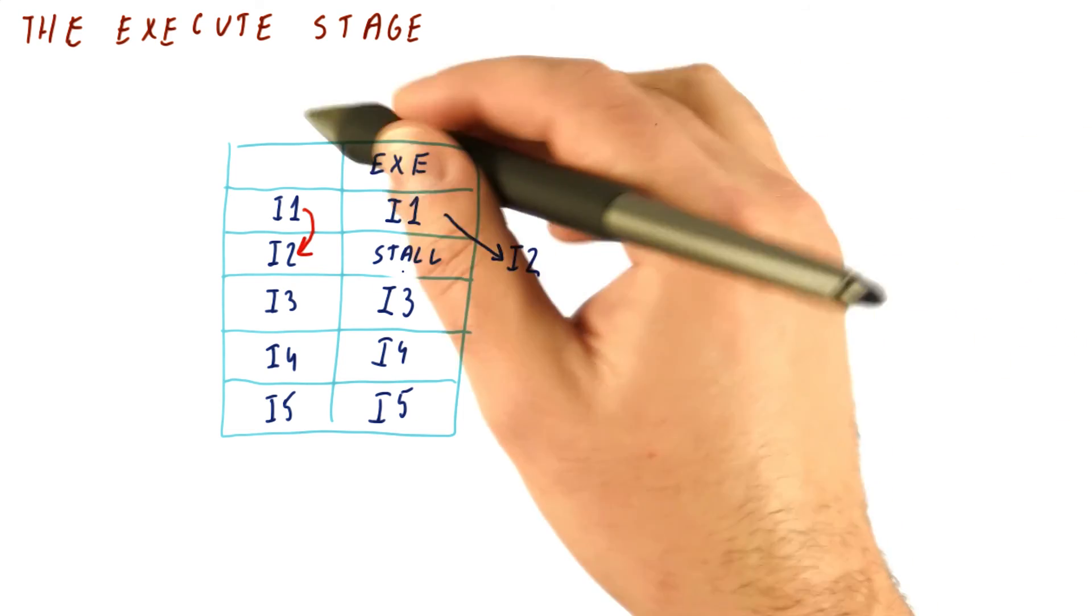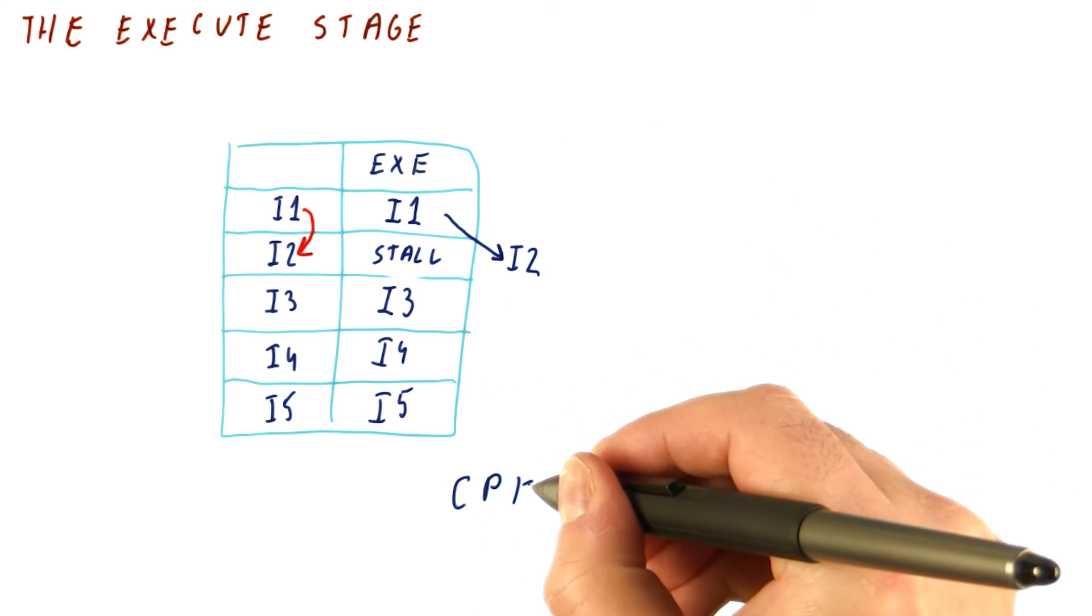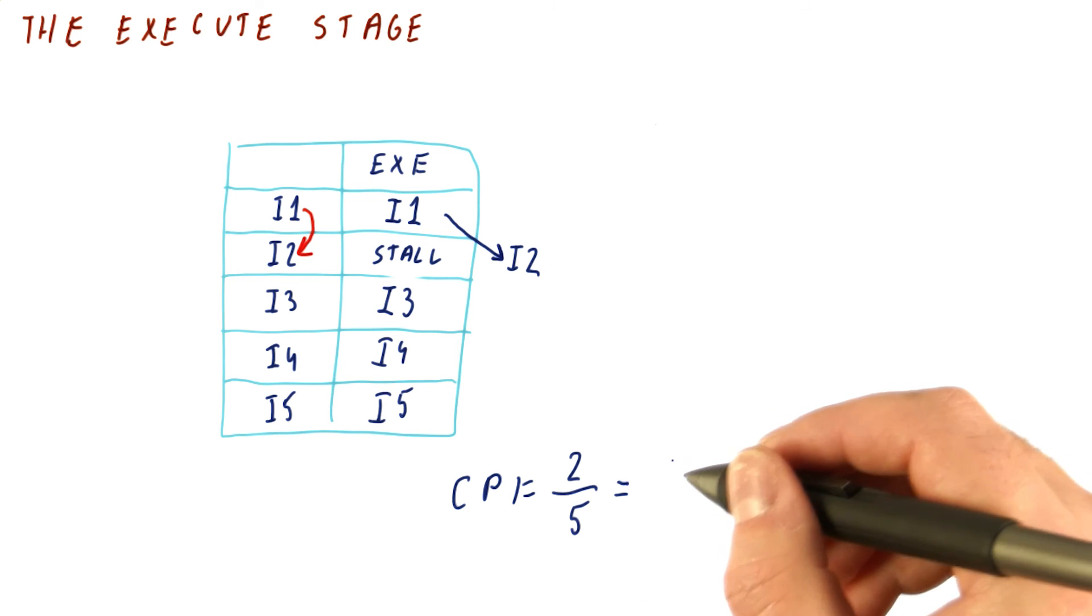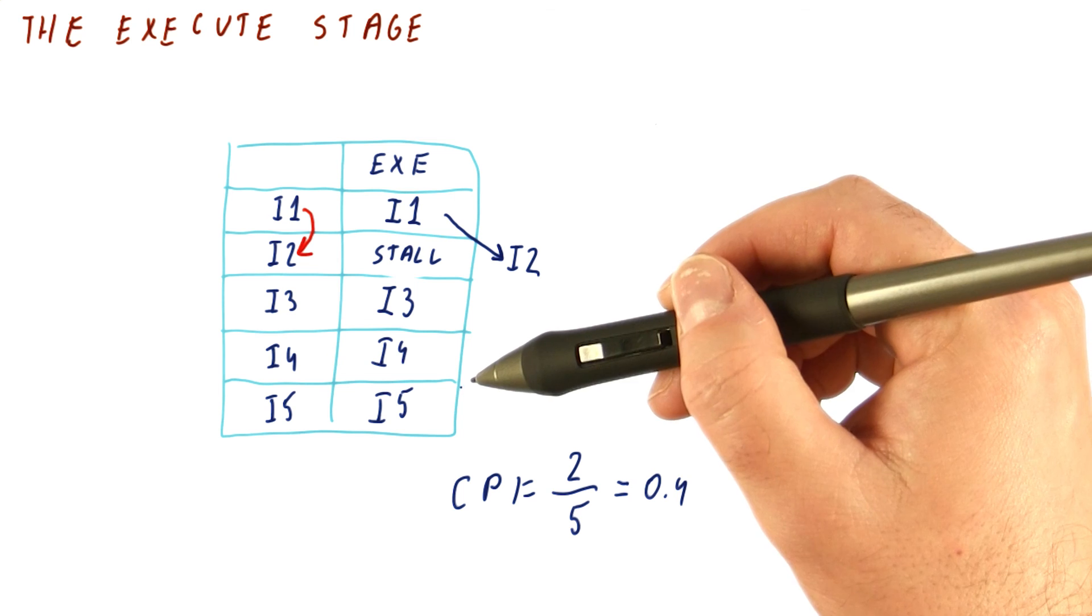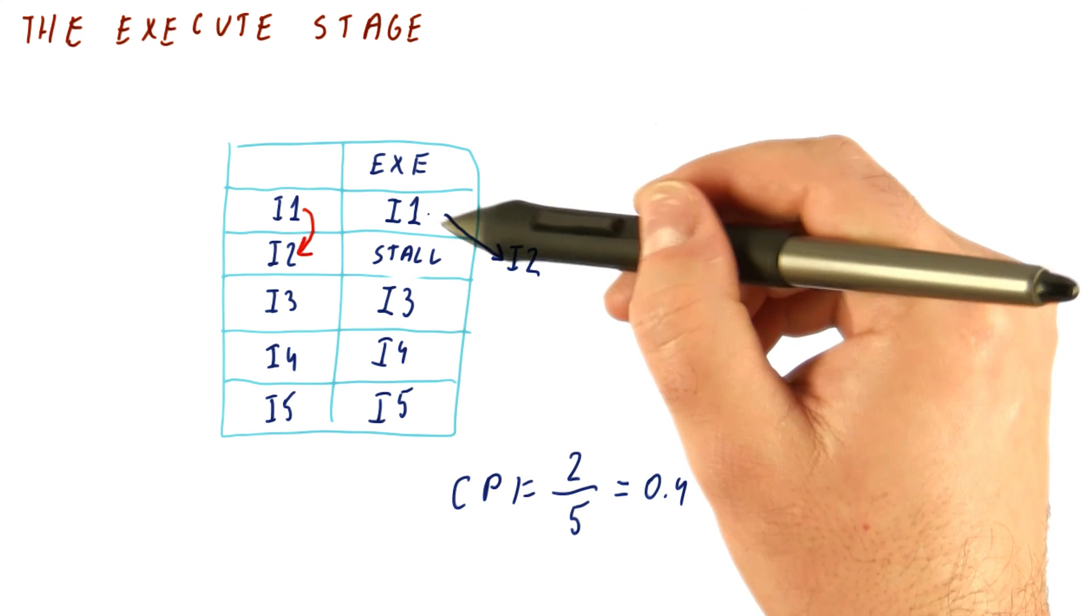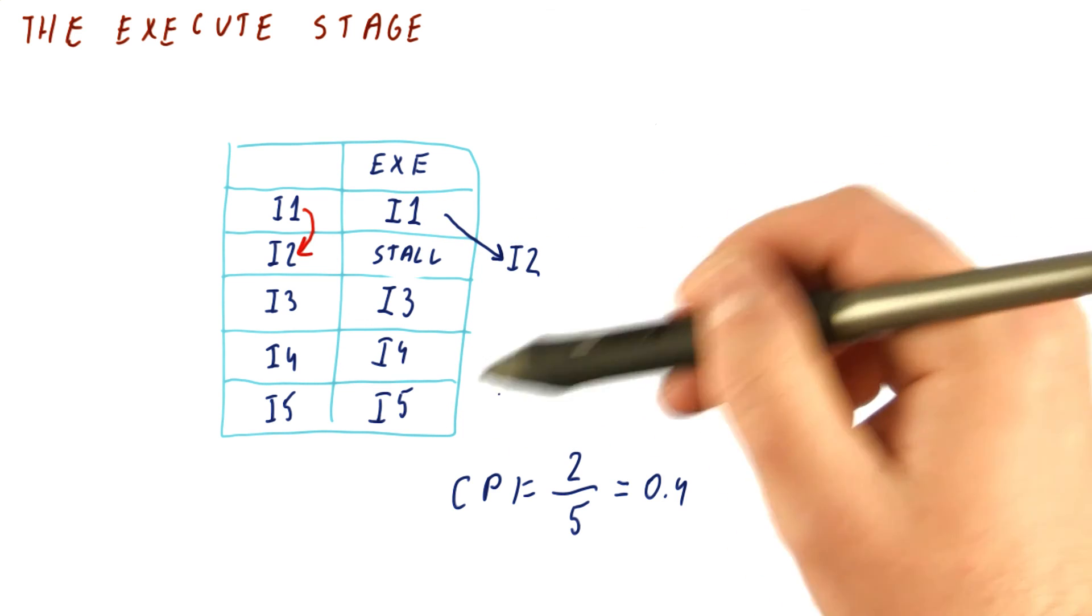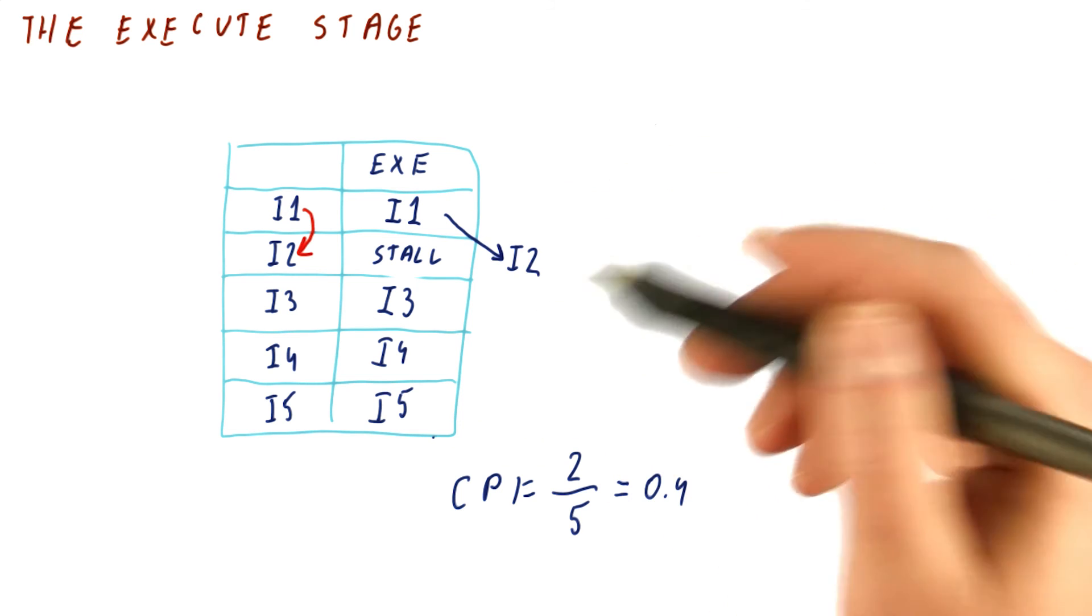If we ignore the filling of the pipeline and so on, what we have now is the CPI is equal to 2/5 in this case, which is 0.4. So instead of it being 0.2 for these five instructions, it would be 0.4. If we have a lot of instructions, there will be a lot of these dependencies. So we will have a CPI that is not zero, even if we had an infinite number of execution units.